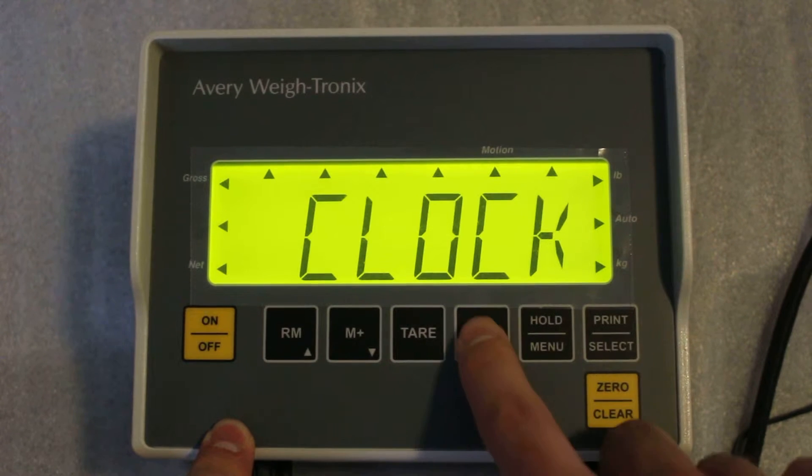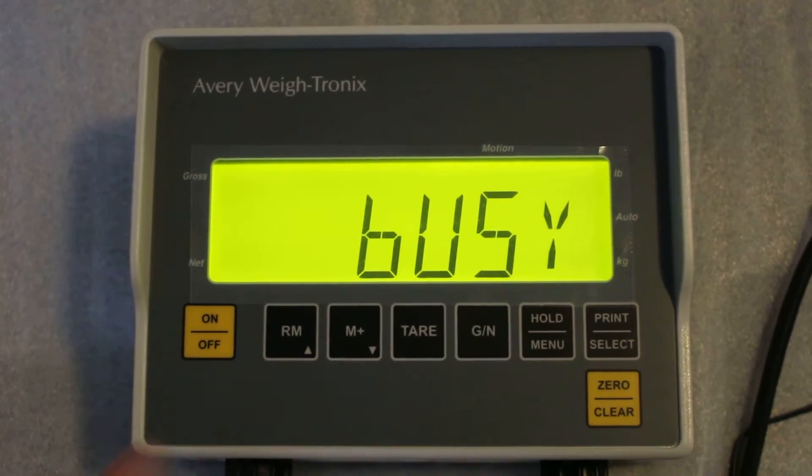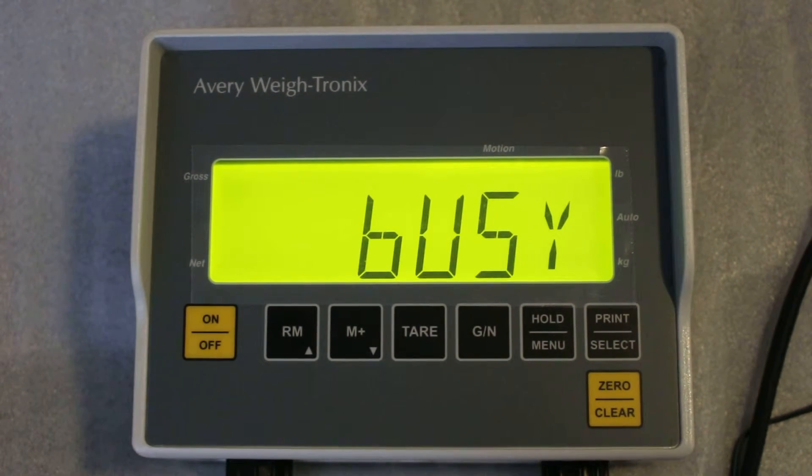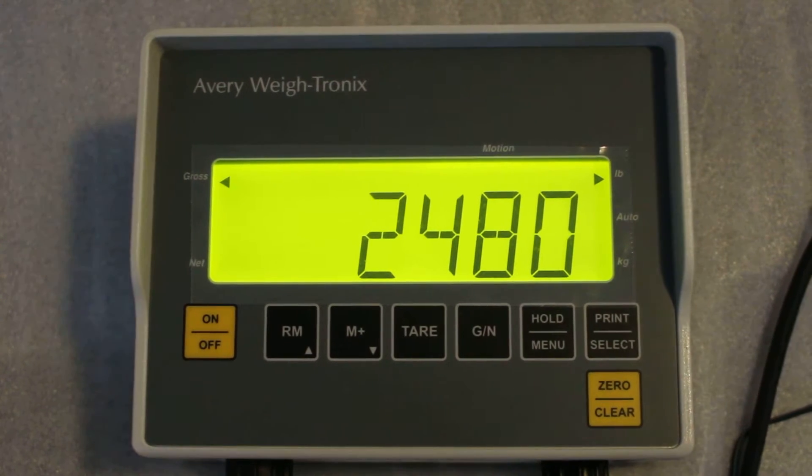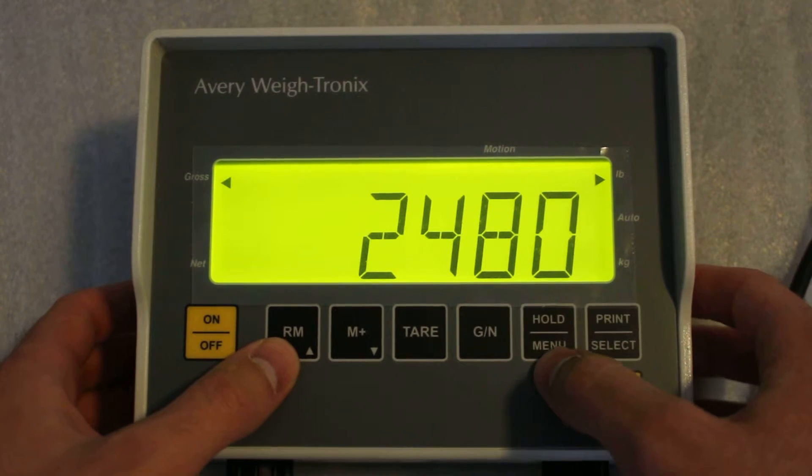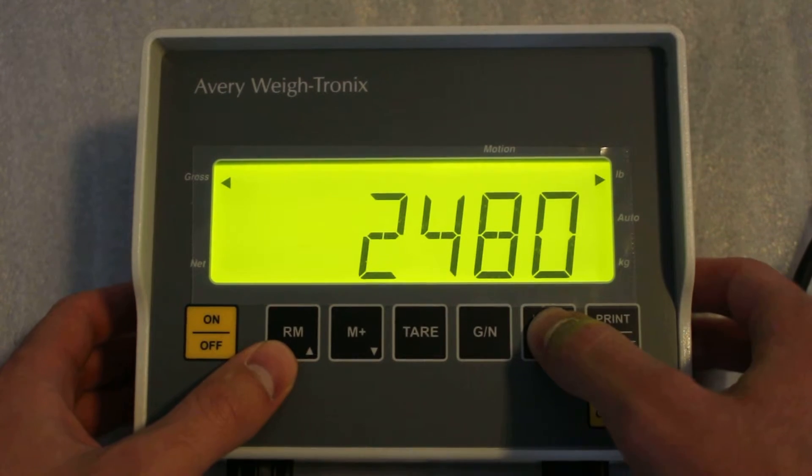And then push print select, G in, and now we're ready to set the time up as well as the date. On this option, you're just going to push down the hold menu a couple times and then let off.